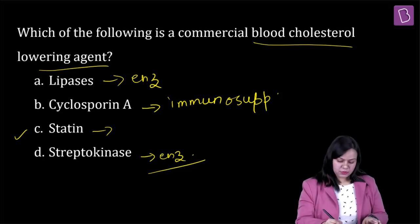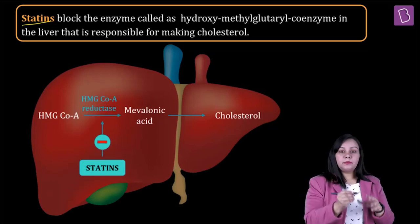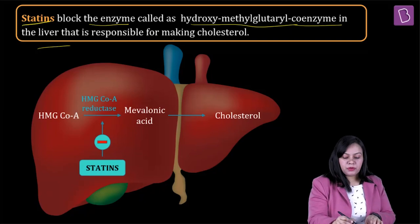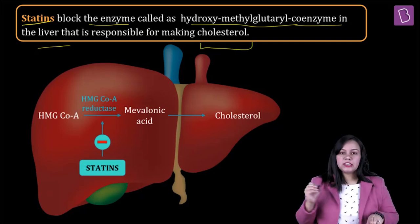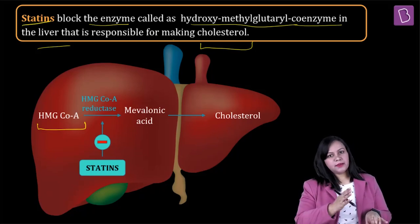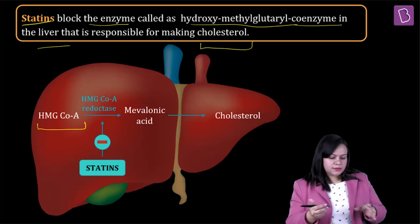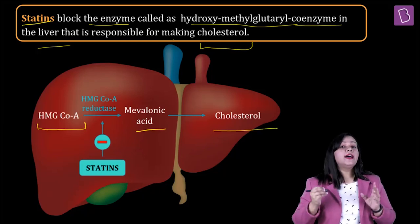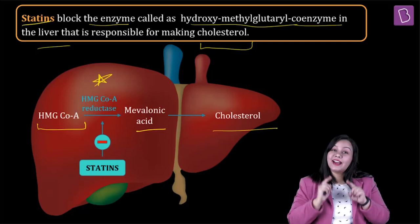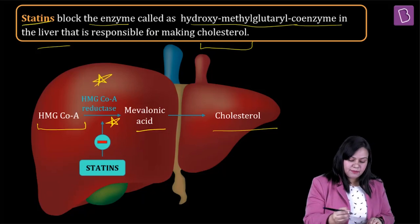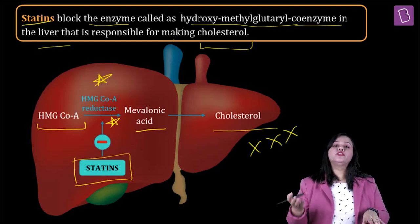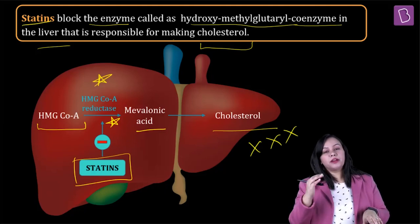Let me take you through the whole concept related to this question. Statins are components which block the enzyme called hydroxy methyl glutaryl coenzyme A in the liver, which is responsible for making cholesterol. HMG-CoA forms something called mevalonic acid, which ultimately leads to synthesis of cholesterol, all happening in the liver. This is mediated by HMG-CoA reductase. Statins competitively block this enzyme, thereby blocking cholesterol synthesis, which is why people suffering from very high cholesterol use statins to lower blood cholesterol.